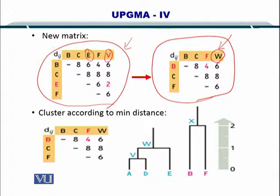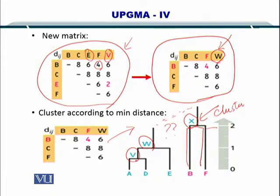Now we want to create the phylogenetic tree. So B and F had a distance of 4 here, so we created a cluster X. While the previous tree that we had calculated had V and W, so how do we connect these two trees? That is the question.